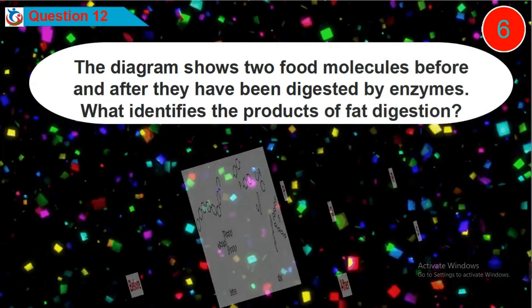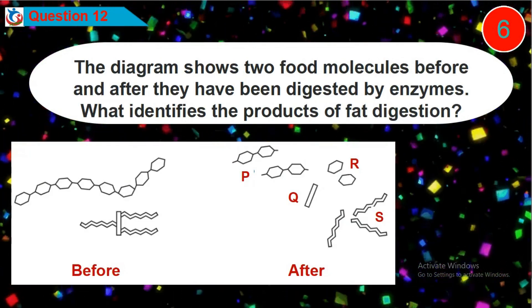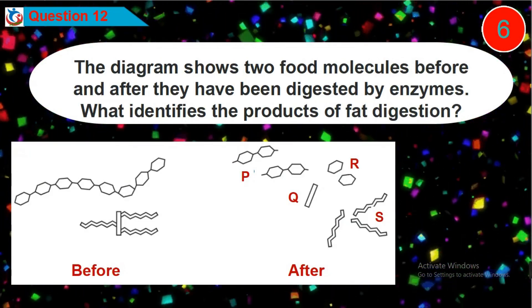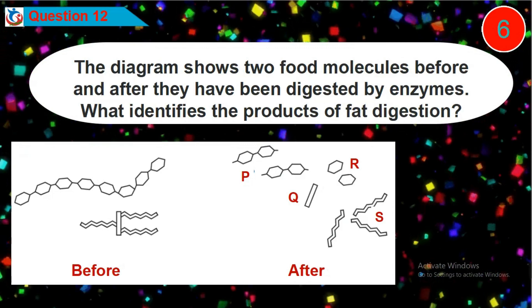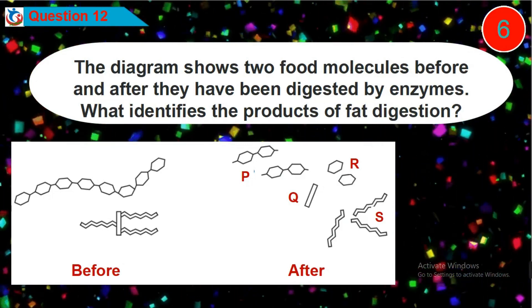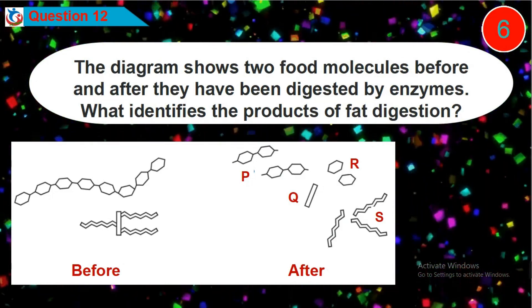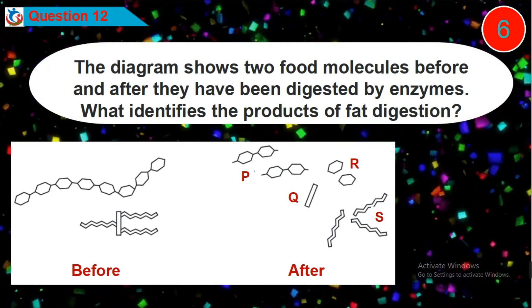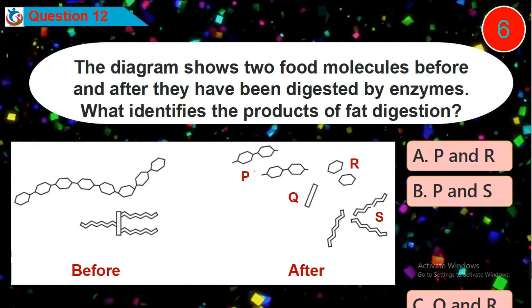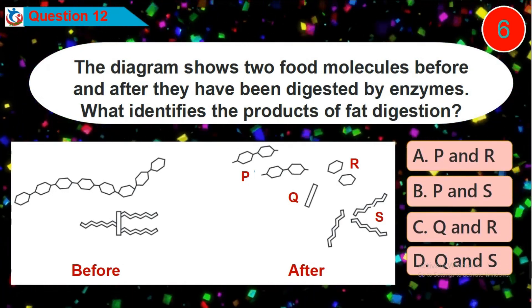Question 12. The diagram shows two food molecules before and after they have been digested by enzymes. What identifies the product of fat digestion? Is it option A, B, C or D?